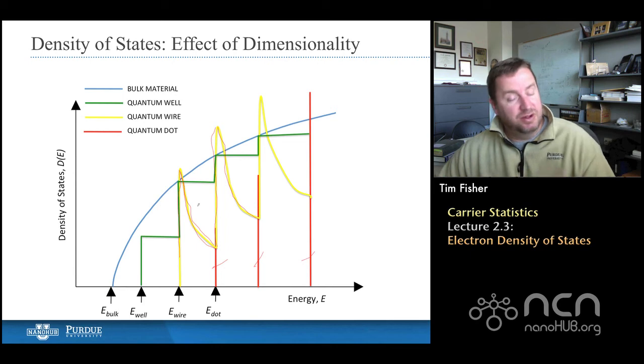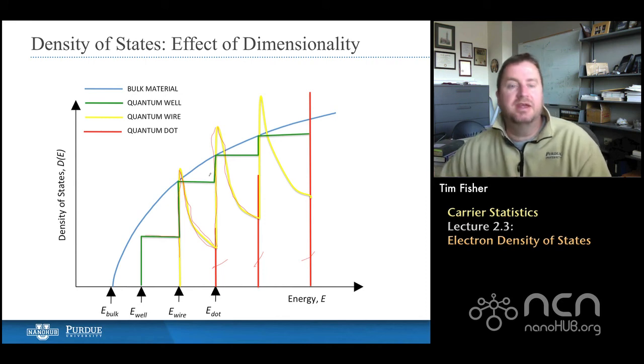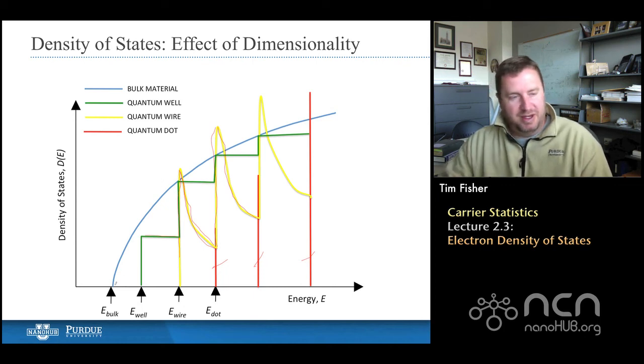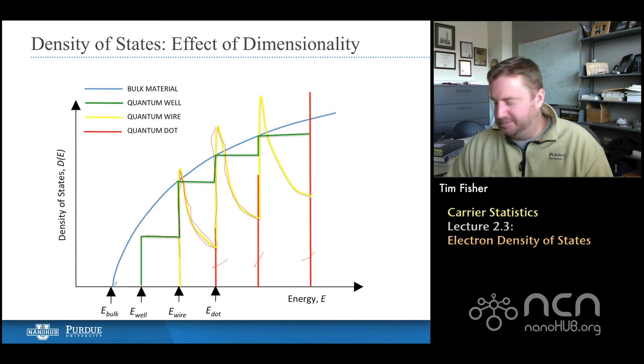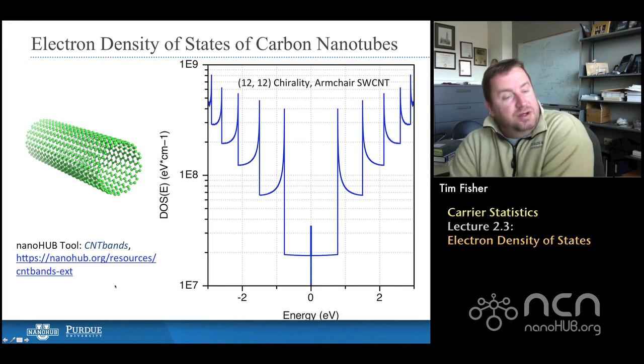For the quantum wells, that's the two-dimensional materials. Then we have these flat curves. But then when we hit another band, we have a step function up, and a step function, and so on and so forth as we hit each additional band. And then finally, for the 3D material, that's what we'll call bulk. We have that square root of energy dependence of the density of states.